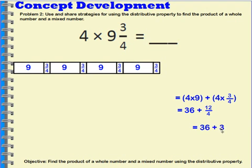So what I really have here is thirty-six plus three. Thirty-six plus three is equal to thirty-nine. So four times nine and three-fourths is equal to thirty-nine.